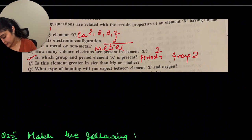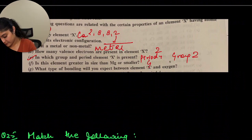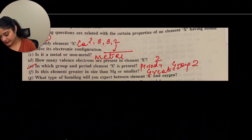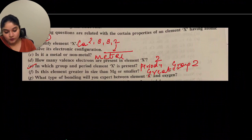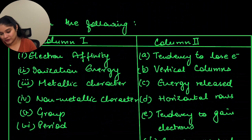Is element X (calcium) greater or smaller than magnesium in atomic size? Calcium will be greater than magnesium. What type of bonding will you expect between element X and oxygen? Between calcium and oxygen, you will have an ionic bond.